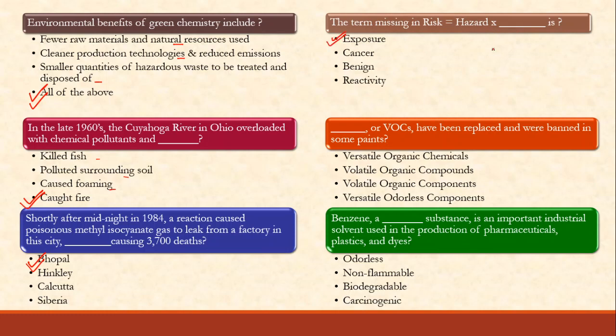The term missing in: Risk = Hazard × Exposure. That missing term is exposure. You can calculate this numerically. If you'd like me to cover this topic, write in the comments and I'll make a video on it.